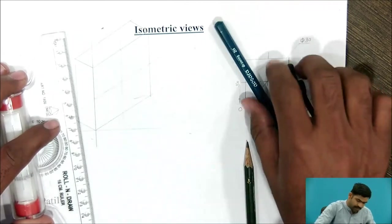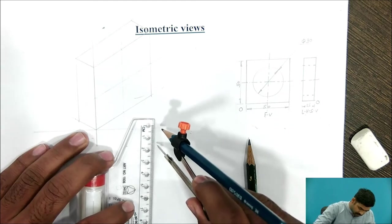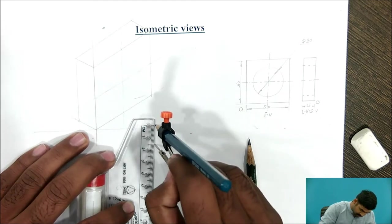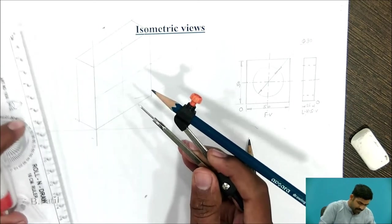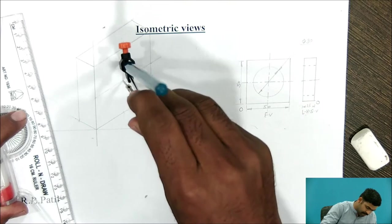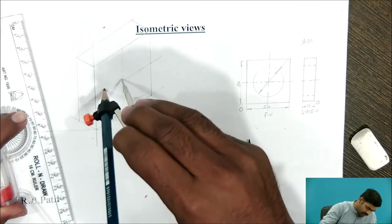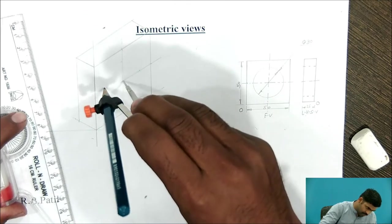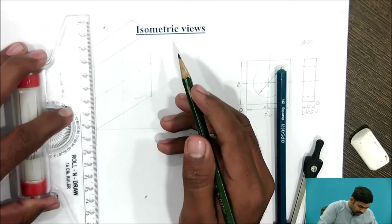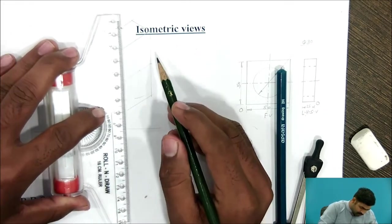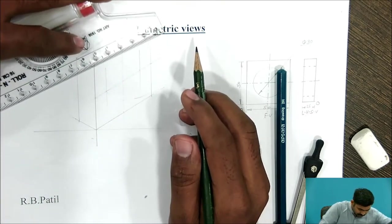Now, you have to draw the circle, which has diameter of 30 mm. Take in compass 15 mm dimension from centre line, mark 15 mm. Now, draw isoline parallel to this, passing from this 50 mm mark.